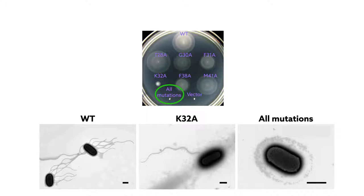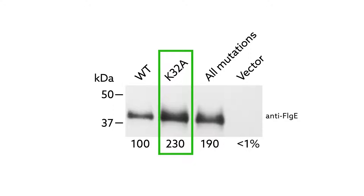Interestingly, the K32 mutant strain made twice as much hook protein, suggesting the lysine is important for hook assembly.